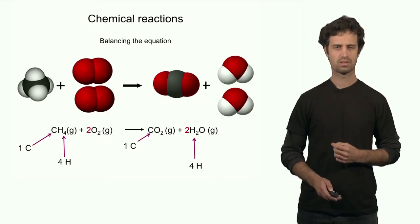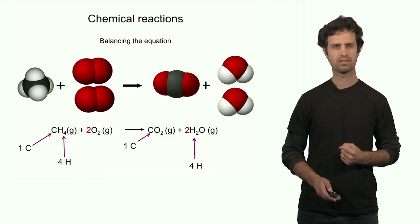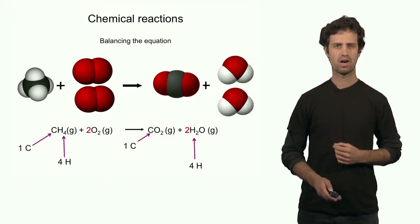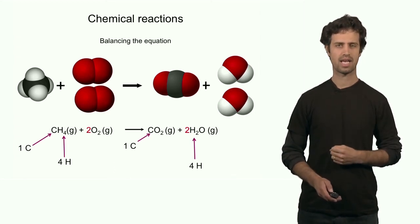What about the other atoms? What about hydrogen? Well, I count 4 on the left, and I also count 4 on the right. 2 for each water molecule. There's 2 water molecules. That means a total of 4 hydrogen atoms.